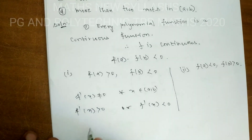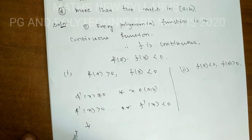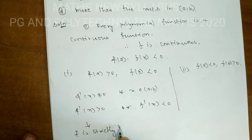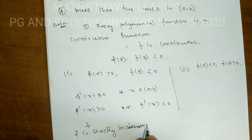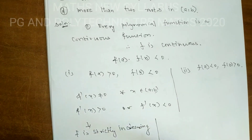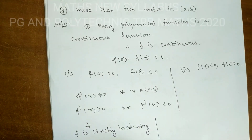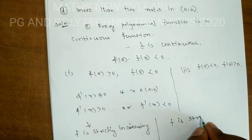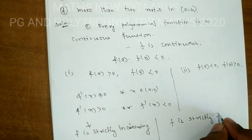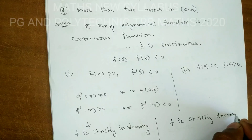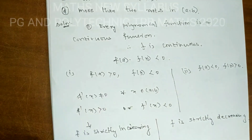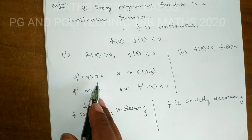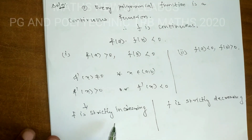Now, f'(x) > 0 means f is strictly increasing, and f'(x) < 0 means f is strictly decreasing. Since f'(x) ≠ 0 for any x, this implies f is either strictly increasing or strictly decreasing throughout the interval.